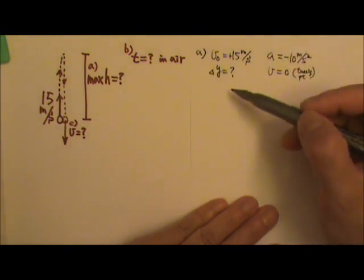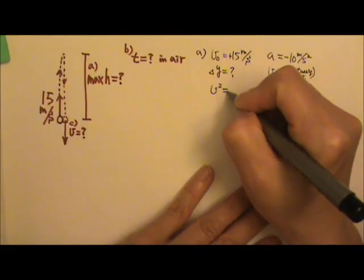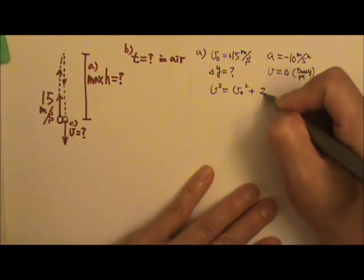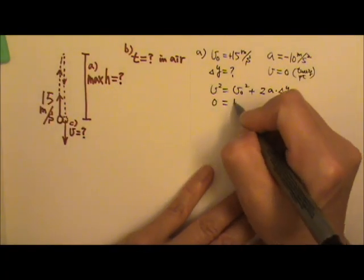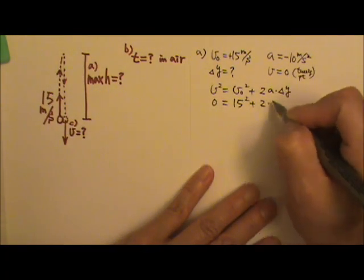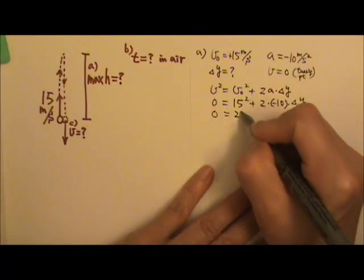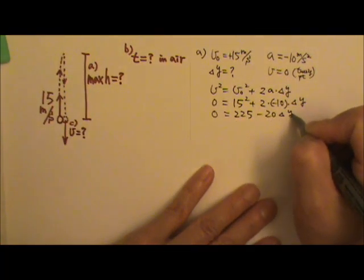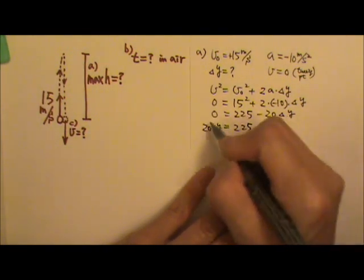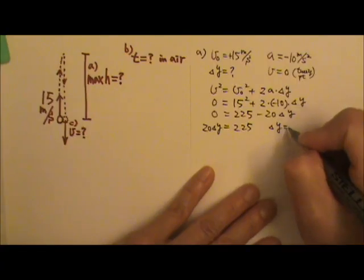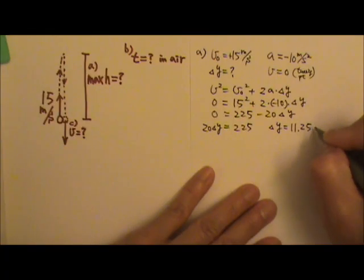There is no time involved, so the v-squared equation is convenient to use. Final velocity squared equals initial velocity squared plus 2A times the displacement. The final velocity is zero, the initial is 15, plus 2A times delta y. So this is 0 equals 225 minus 20 delta y. 225 equals 20 delta y. So delta y is 225 divided by 20, which gives you 11.25 meters.